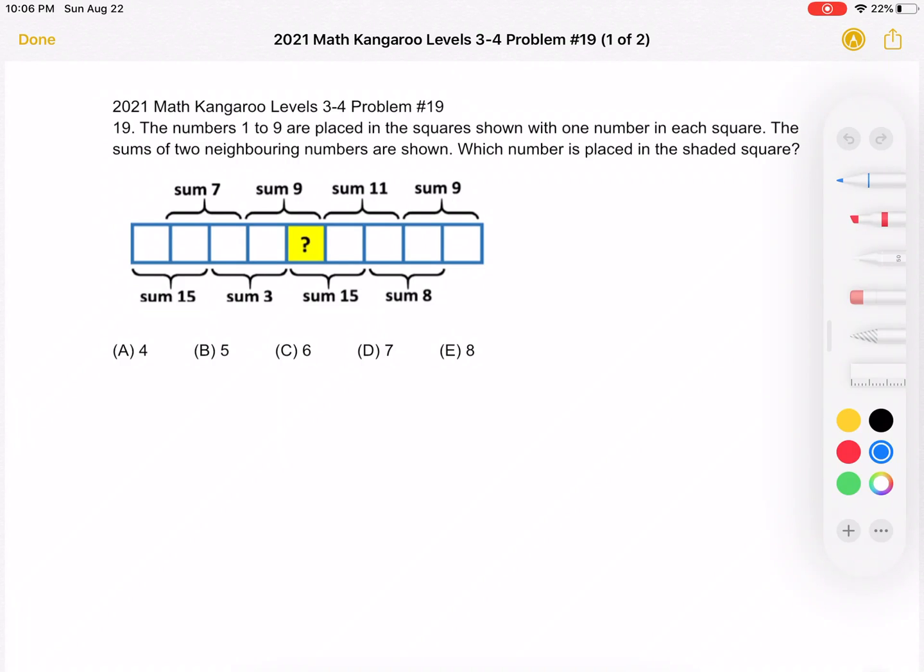This is the 2021 Math Kangaroo Levels 3-4 problem number 19. The numbers 1 to 9 are placed in the squares shown with one number in each square. The sums of two neighboring numbers are shown.